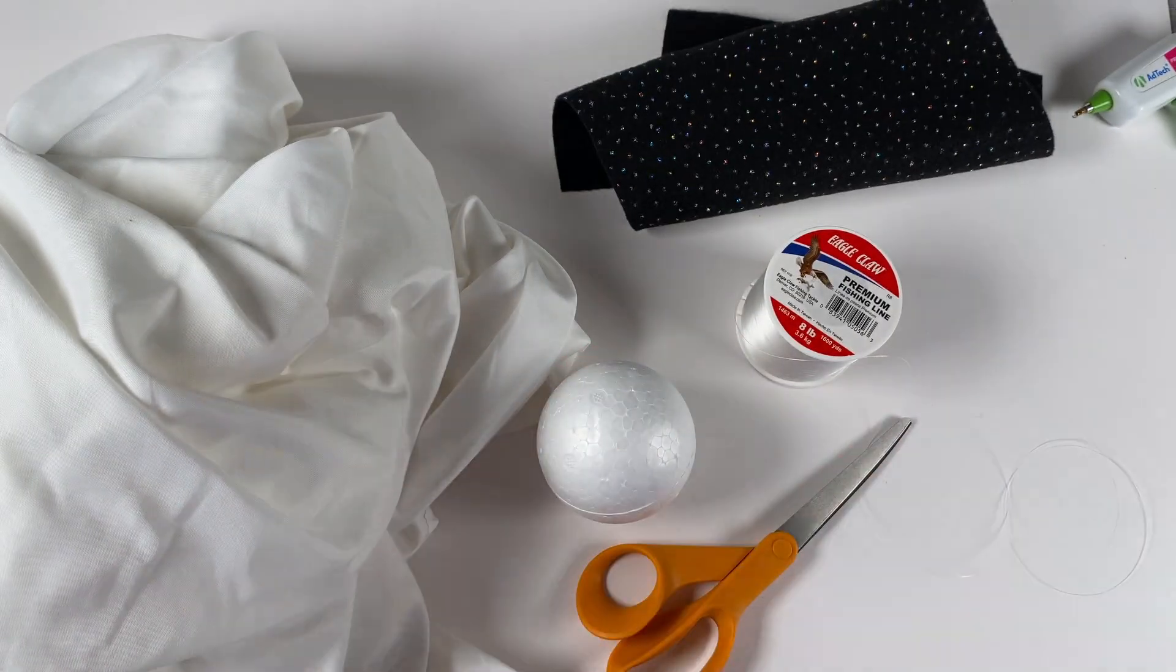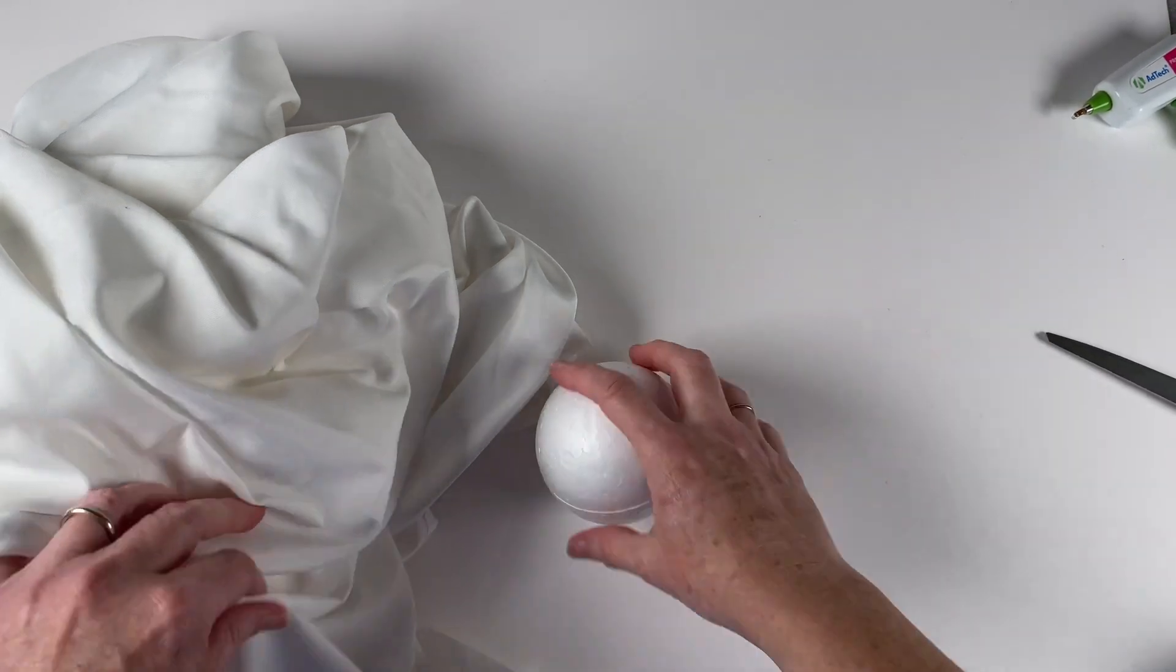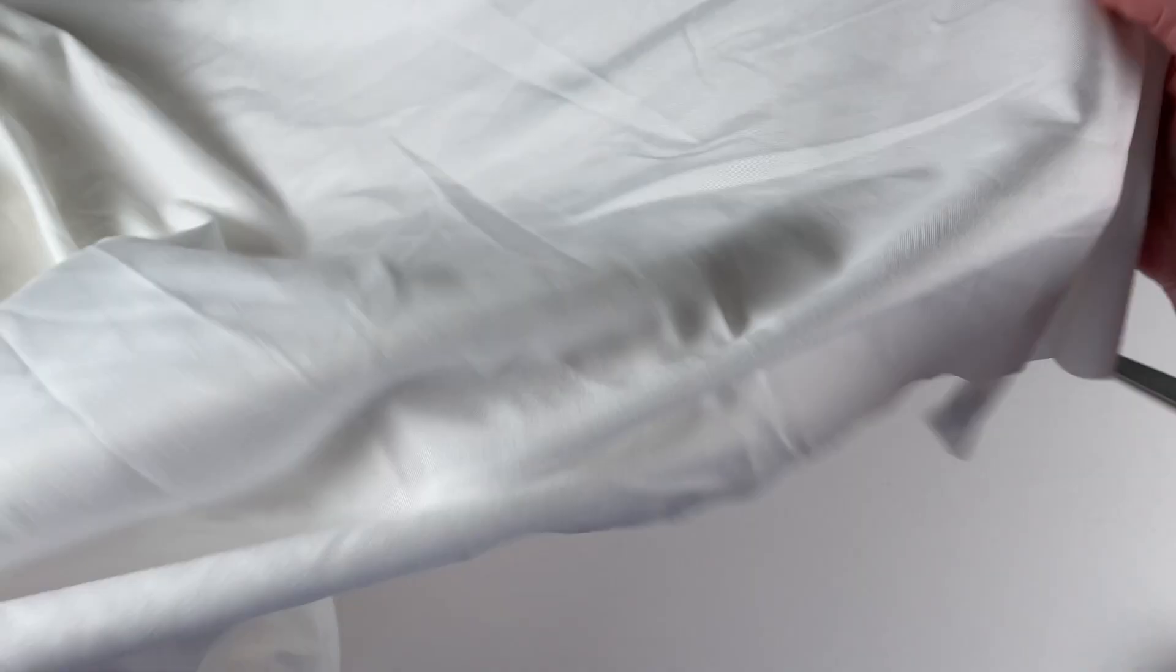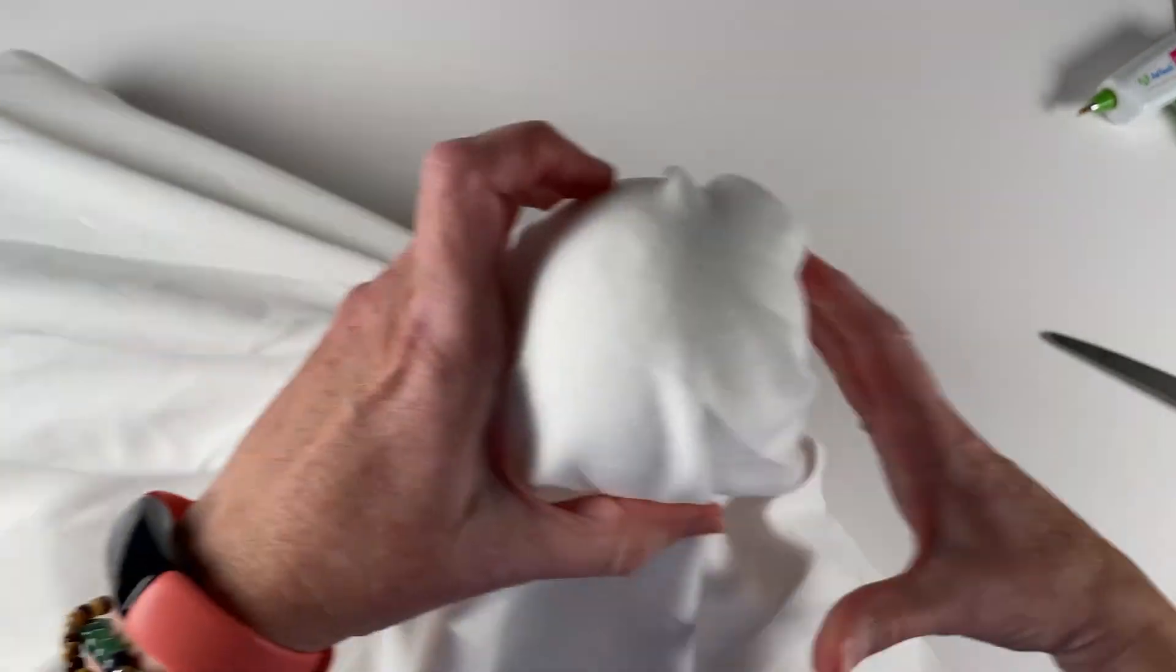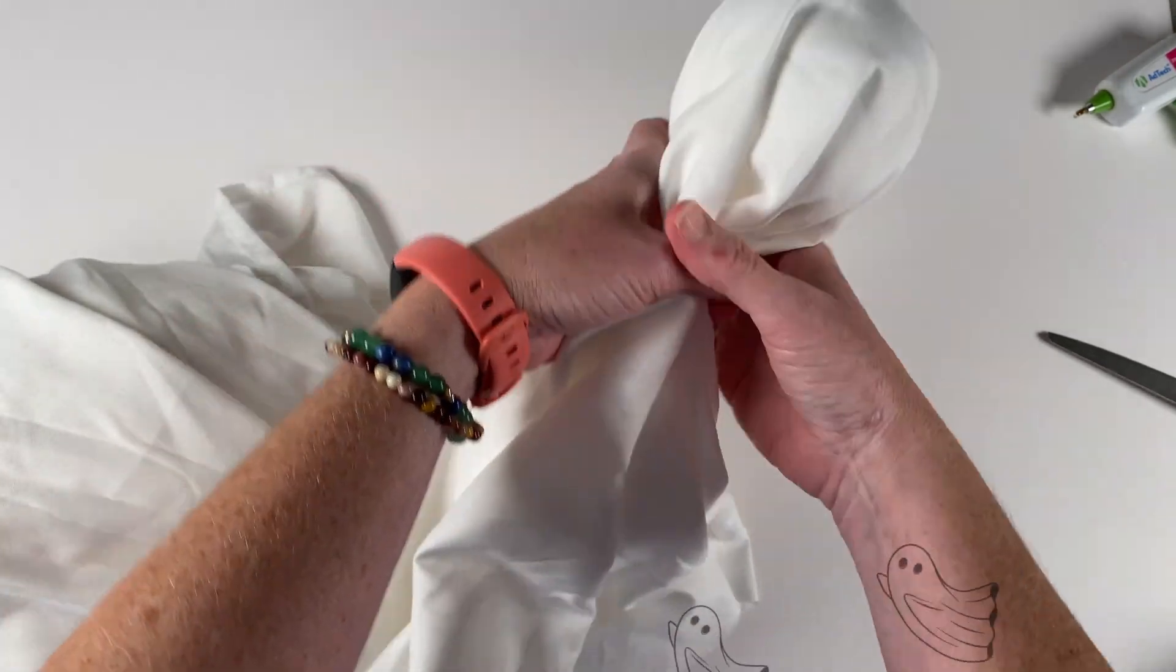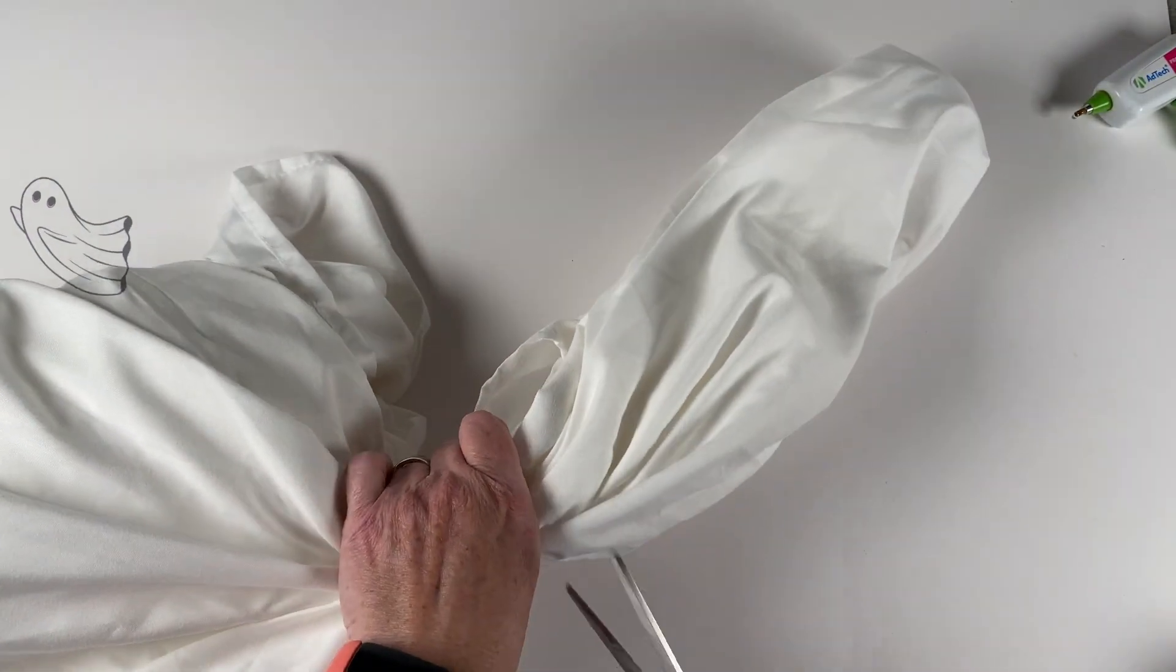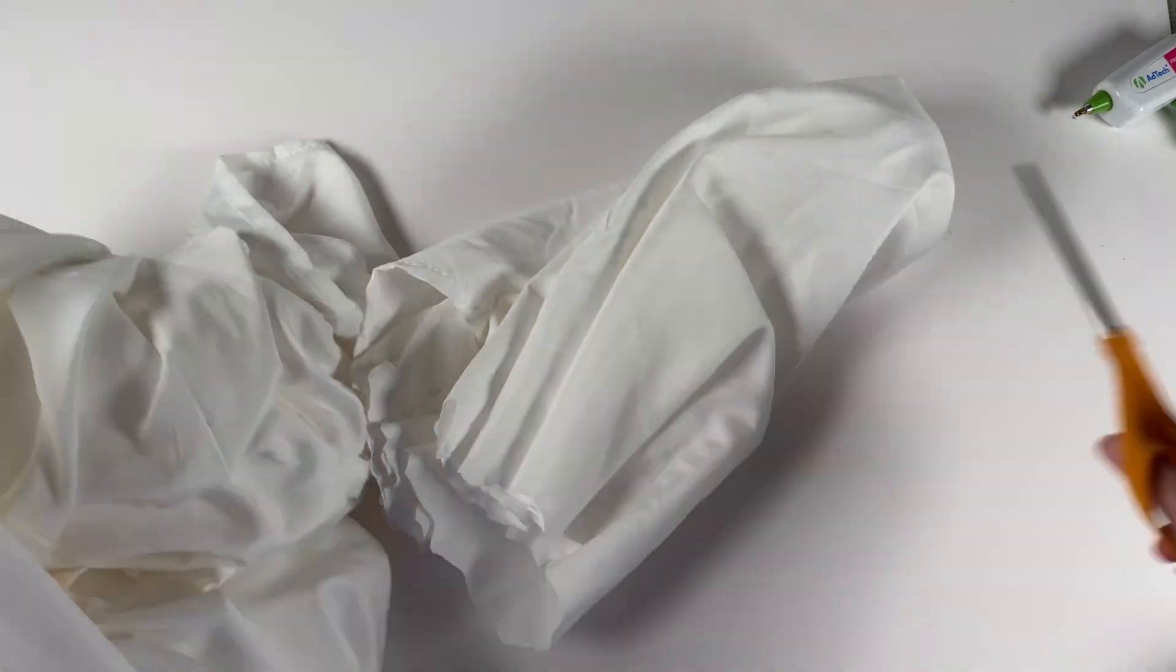Take the foam ball and wrap the sheet around it, leaving some excess sheet below. Cut off the excess. It doesn't have to be neat; actually cutting a little jagged is fine.